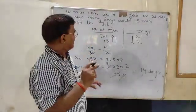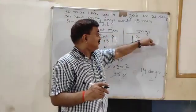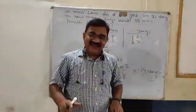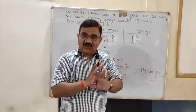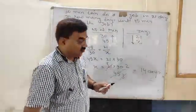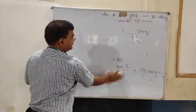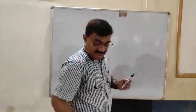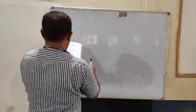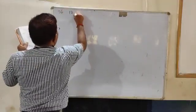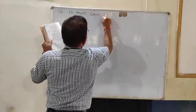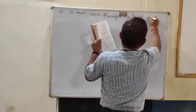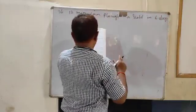Understood? Once more: when the number of men is 30, the work is finished in 21 days. If the number of men is increased, the days will decrease — it means it is inverse variation. In inverse variation, the mouth of the arrow should be opposite to each other. Next question from the exercise: 12 men can plow a field in 6 days.